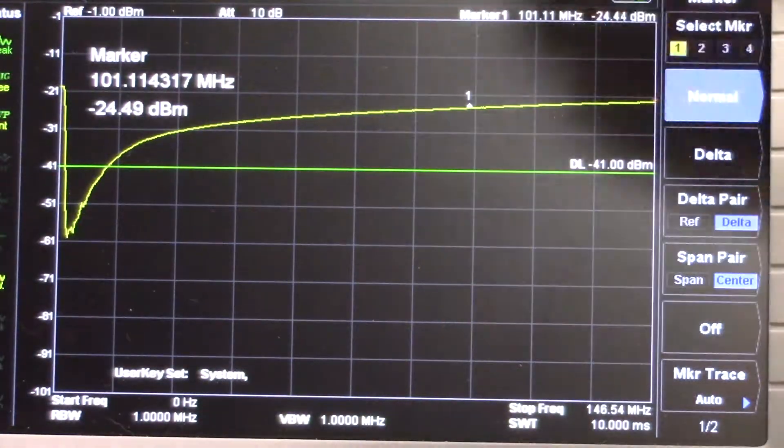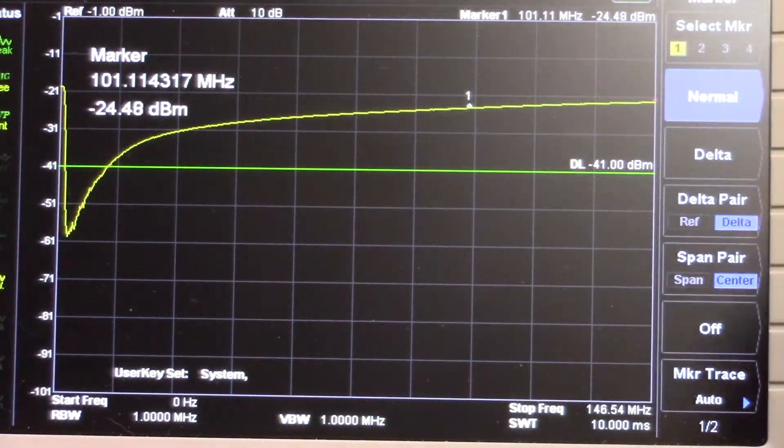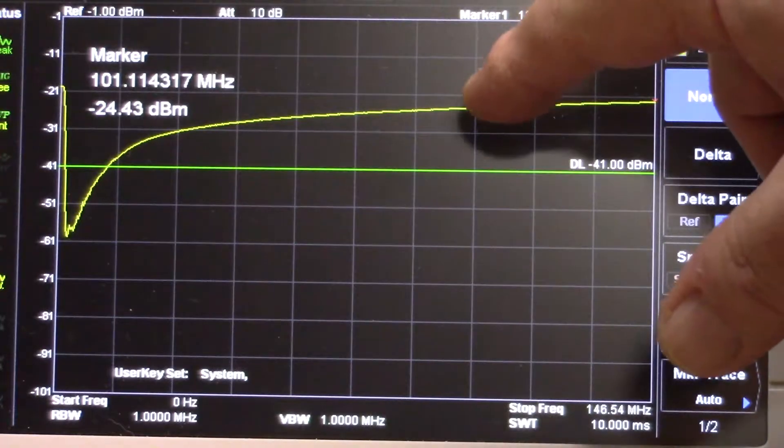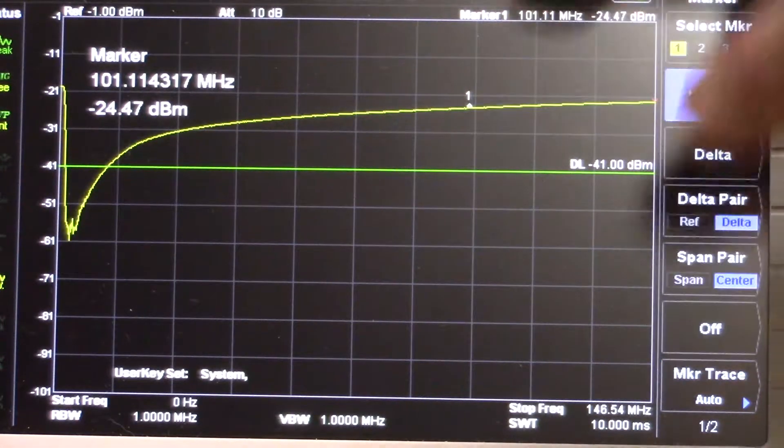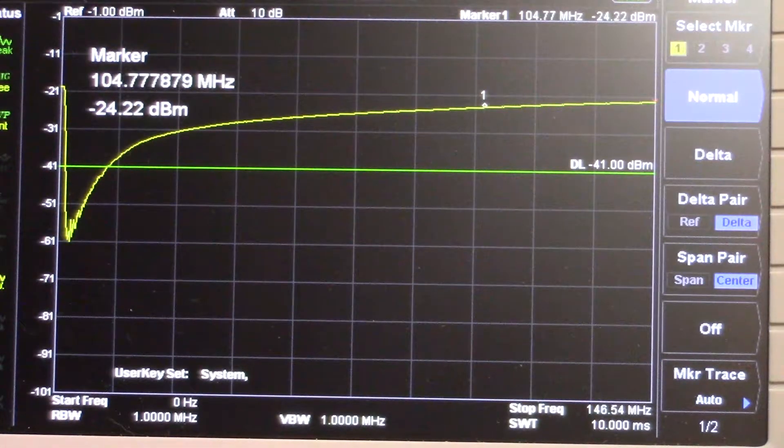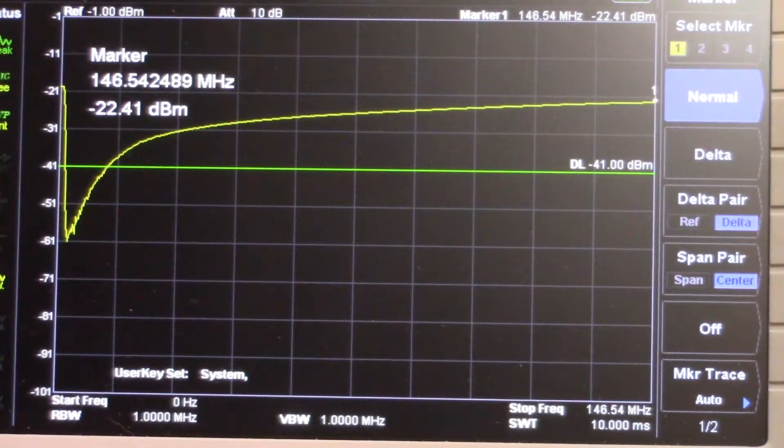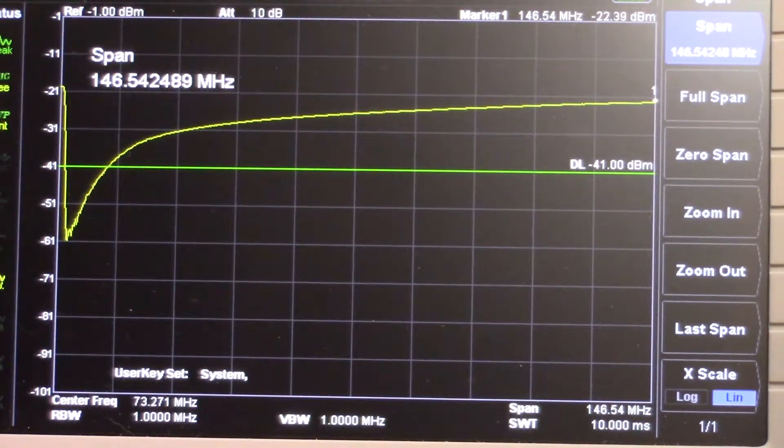So once we get to a hundred megahertz here which is where our marker's at, then we start seeing a good bit higher signal level. And if I change the span and zoom out some, you can see that we're back up to minus 21 or almost full signal level according to the way this is set. This is our zero line essentially.